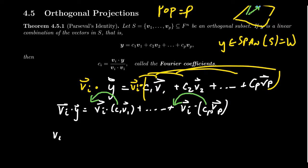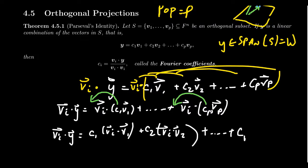So the left-hand side is VI dot Y. The right-hand side, we're going to get C1 times VI dot V1. And then the next one will look like C2 times VI dot V2. All the way down till the end, we'd end up with CP times VI dot VP.